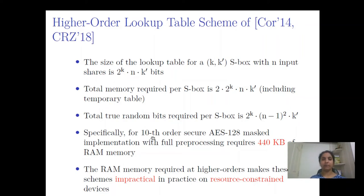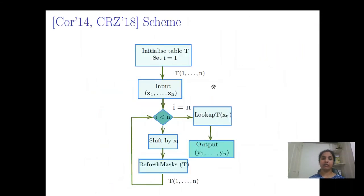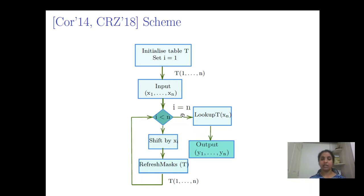If we instantiate this scheme for order T=10 (meaning n=11), we need 440 kilobytes of memory for a single AES execution, which may become prohibitive for a resource-constrained device. In the high-level overview of the EuroCrypt 2014 scheme, the lookup table has n columns and goes through n-1 shift operations followed by refresh masks. The output of each shift and refresh is passed as input to the next shift, and after n-1 such steps, a final lookup outputs the shares of S(x).